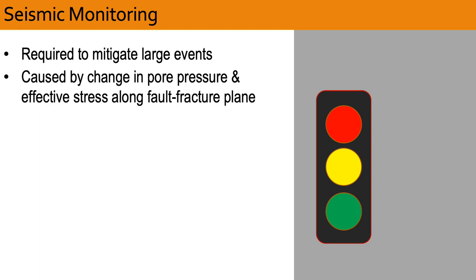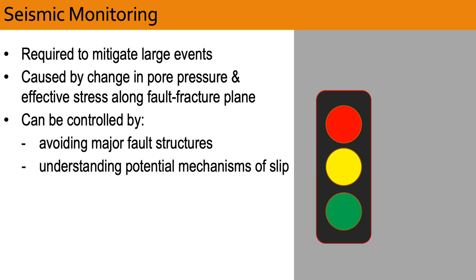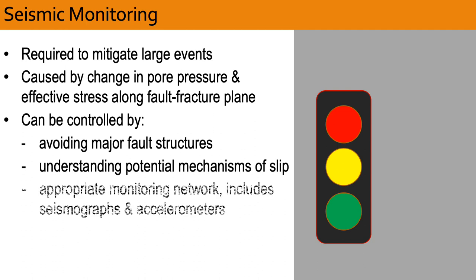Generally, induced seismicity results from a change in pore pressure and effective stress along a fault fracture plane. Induced seismicity can be controlled by avoiding major fault structures, understanding potential mechanisms of slip, having installed an appropriate seismic monitoring network that includes seismographs and accelerometers. The latter are used to detect ground shaking. Advanced planning of action and response.